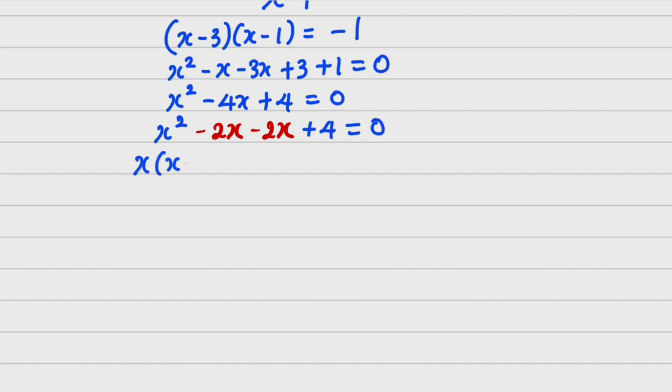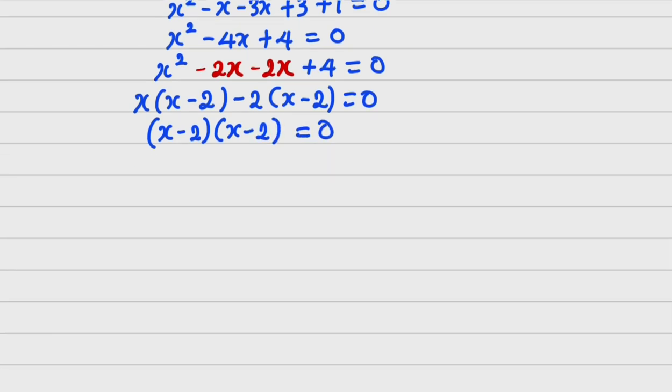Factorizing further, we have X into X minus 2. Then I have minus 2 into X minus 2 is equals to 0. So I have X minus 2 down into X minus 2 is equals to 0. So I am going to have X minus 2 all squared is equals to 0. So that X is equals to 2, but twice.